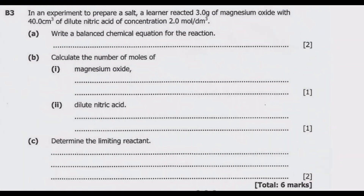Welcome viewers to another episode on ASUG 12 exam. This is the fourth episode in a series focused on the 2020 internal science paper 2, which is in chemistry. The first episode covered the entire section M, episode 2 covered question B1. Now let us look at B3 in detail. Question B3: in an experiment to prepare a salt, a learner reacted magnesium oxide with dilute nitric acid.